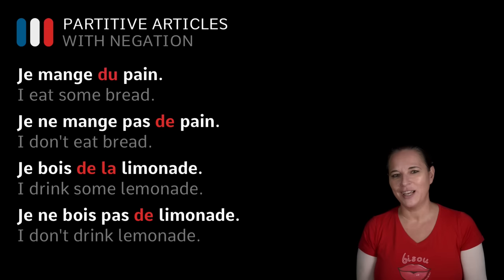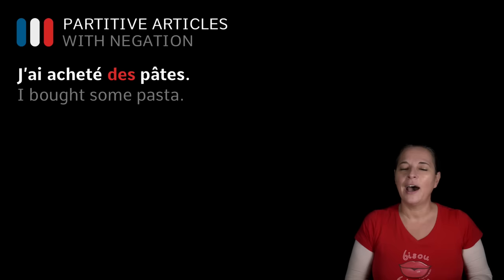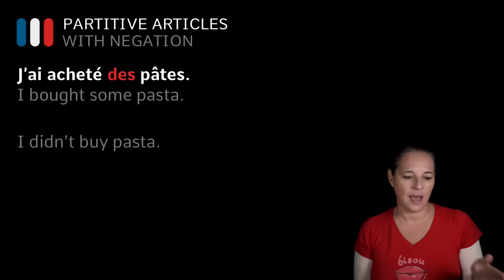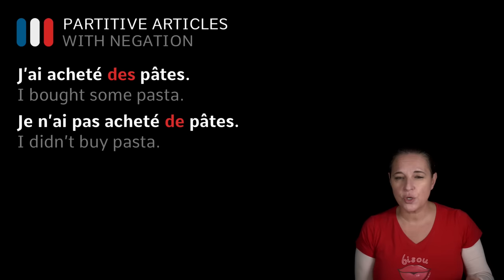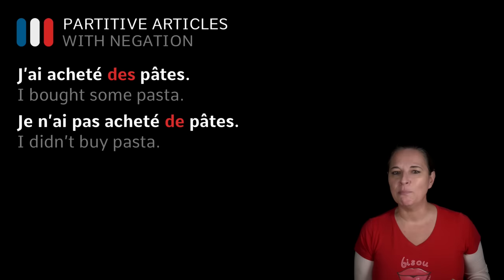Let's have a look at what happens in the case of a plural sentence. 'J'ai acheté des pâtes' — I bought some pasta. We want to say I did not buy pasta. We've got a composed tense here — a passé composé. So here it is: 'Je n'ai pas acheté DE pâtes' — because we are using a negation. You wouldn't say 'Je n'ai pas acheté DES pâtes'; it has to be 'Je n'ai pas acheté DE pâtes'.